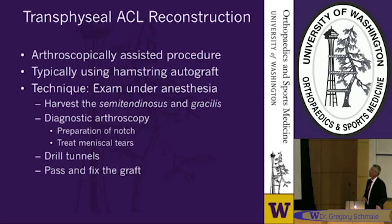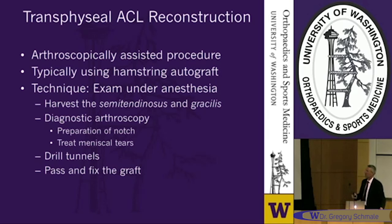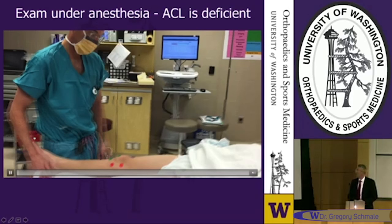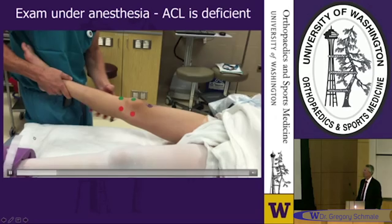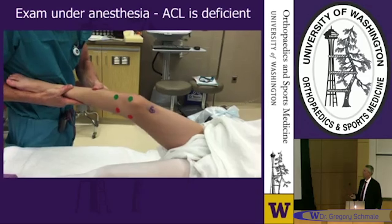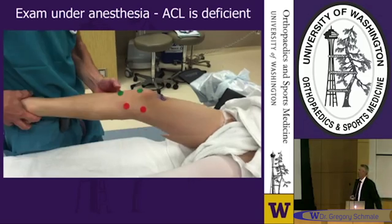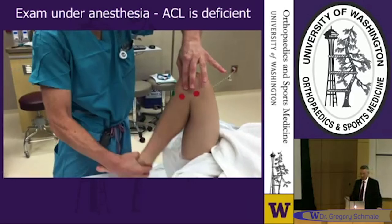The majority of skeletally immature patients at UW and Children's over the past 20 years have been treated with arthroscopically assisted transphyseal ACL reconstruction for the unstable knee. We typically use hamstring autograft. We do an exam under anesthesia, harvest the two tendons, perform diagnostic arthroscopy, prepare the notch, treat meniscal tears, then make the tunnels for passing and fixing the graft. The exam under anesthesia demonstrates the gross instability of the knee on Lachman's test and rotatory instability on pivot shift. We check the collateral ligaments in nearly full extension, the PCL in mild flexion, and feel for any clicking or clunking that might suggest meniscal pathology.